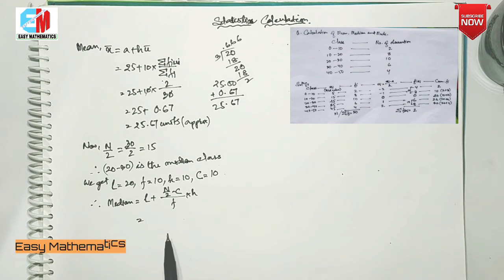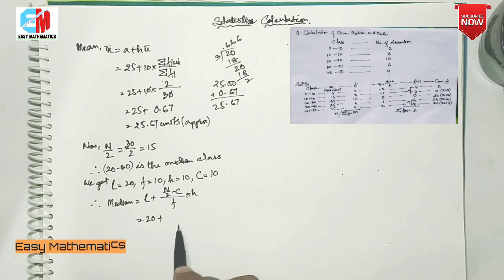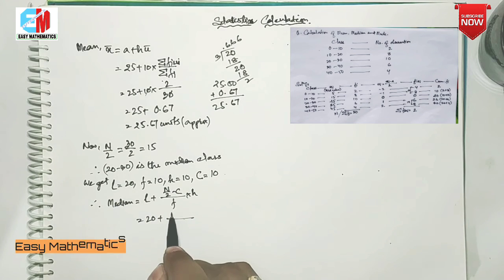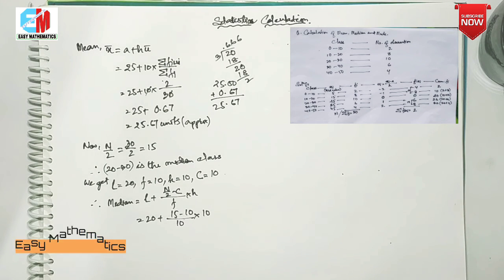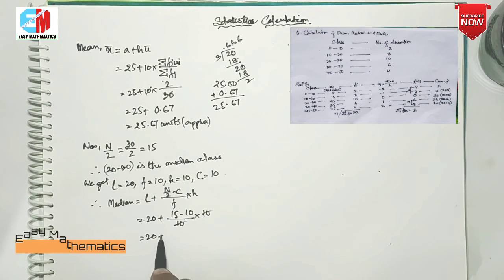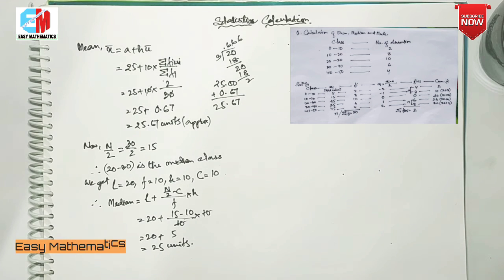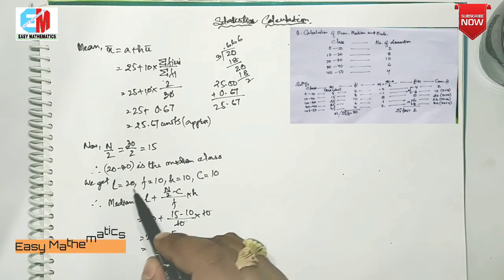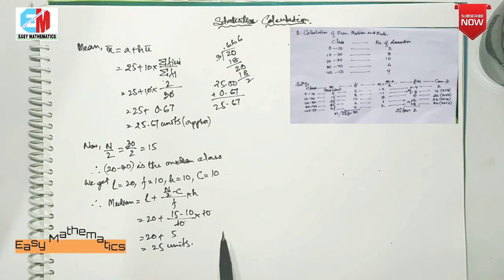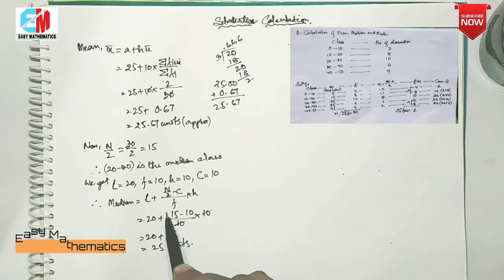The median is equal to L plus N by 2 minus C over F, into X. The median is equal to L plus N by 2 minus C over F into X. The median will be equal to L plus N.